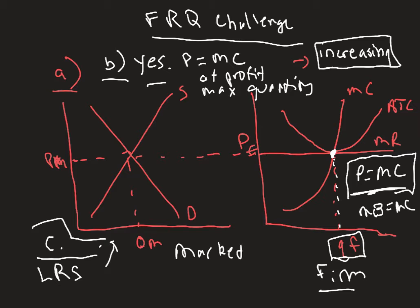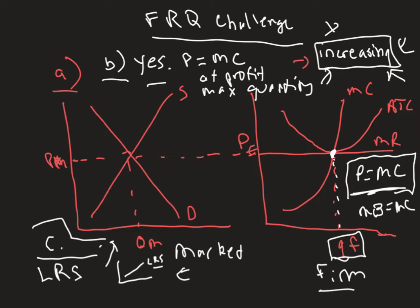Any time you have an increasing cost industry, the long run supply curve is upward sloping — that is definitional. I can describe it as upward sloping, or explain that in an increasing cost industry, as more firms enter the market over successive long run equilibriums, the ATC increases because there is always competition for resources. By definition, an increasing cost market means the long run supply curve will be upward sloping.